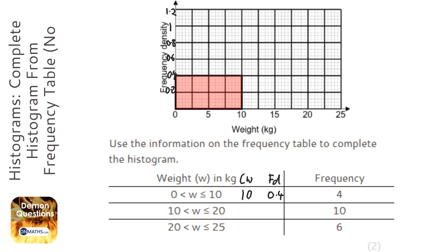And to work out the frequency density for the next one, again class width is 10, 10 divided by 10 is 1, so the height of that is going to be 1. So let's put that up there, it's too high, there we go, and it goes up to 20.